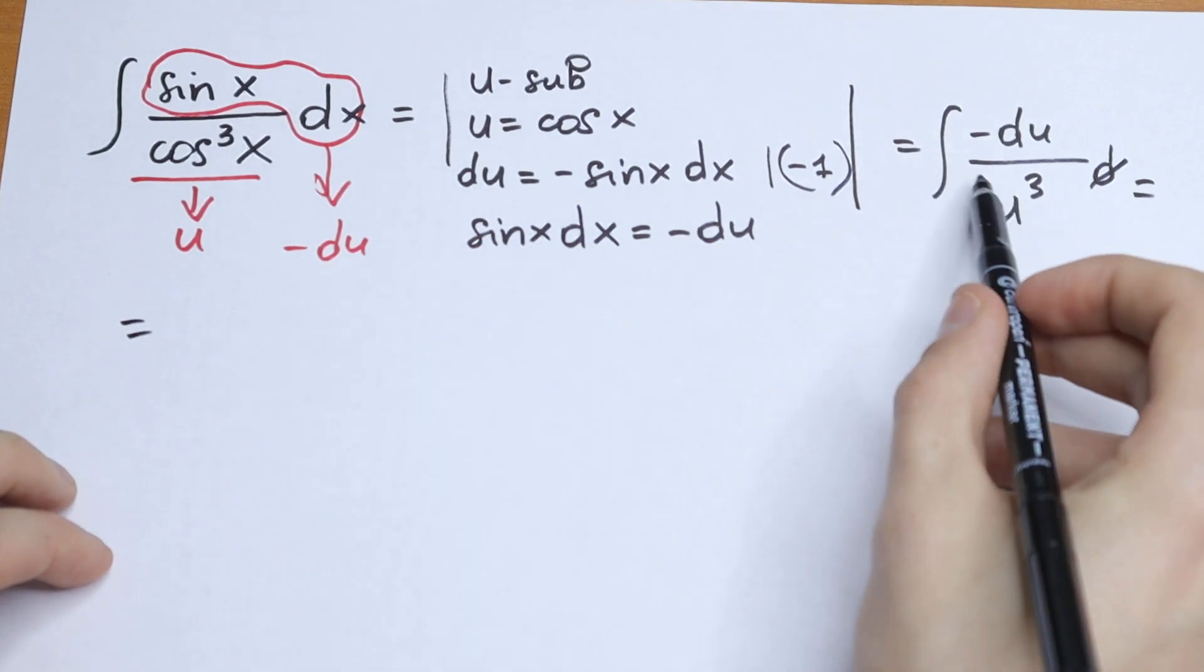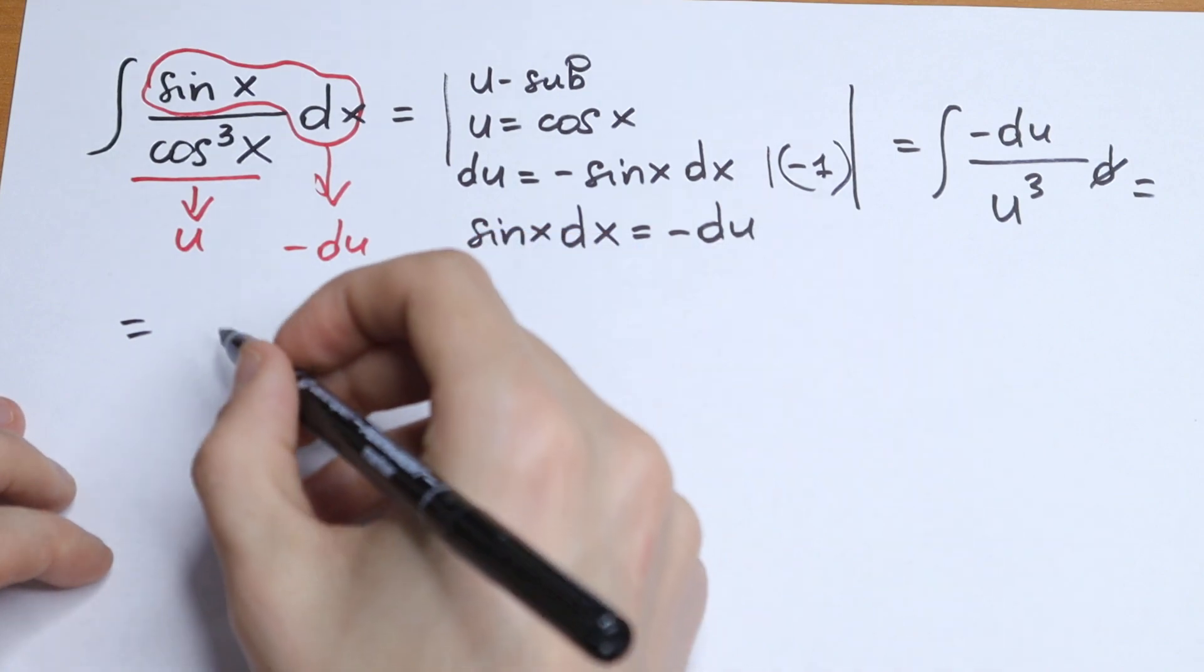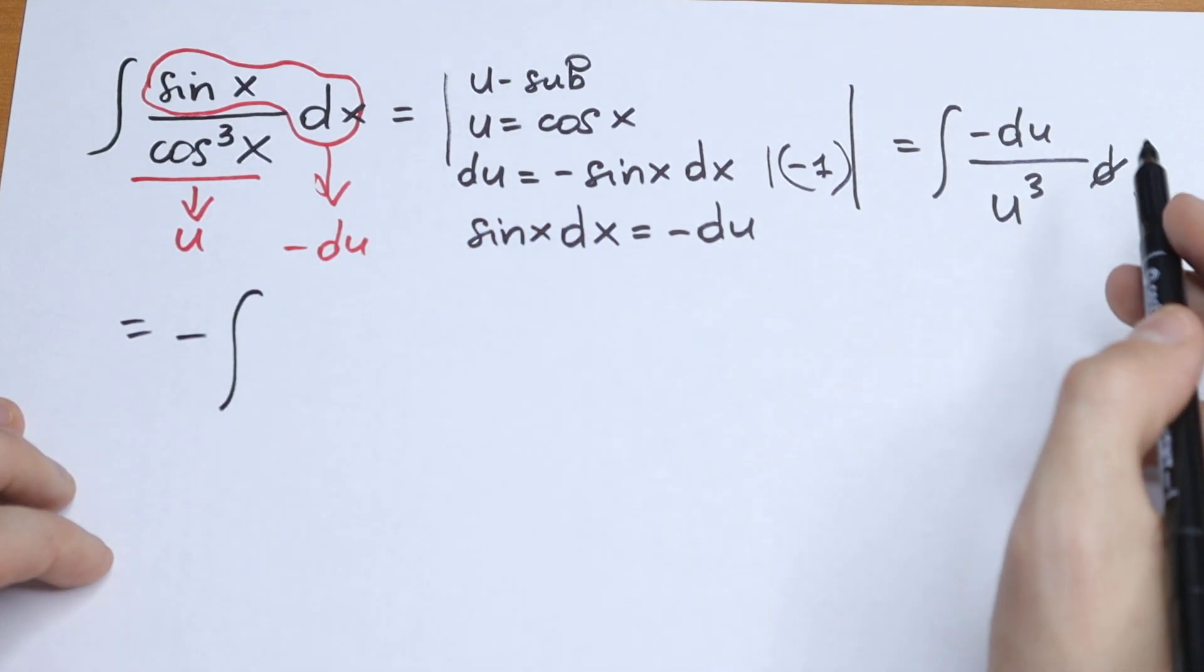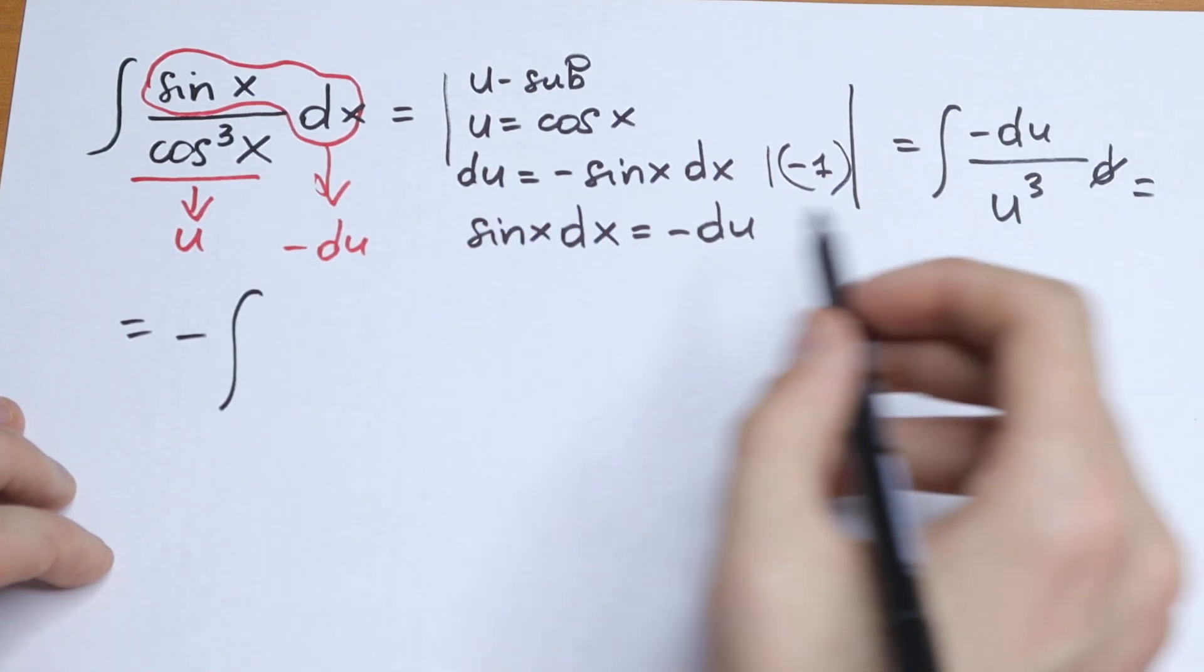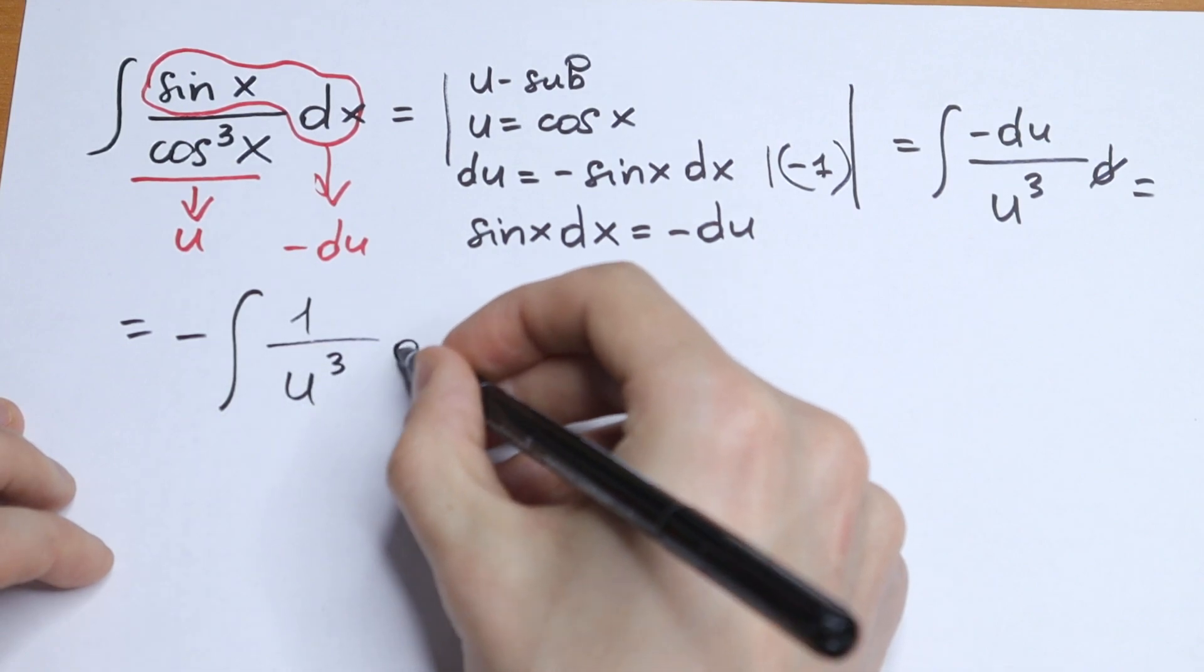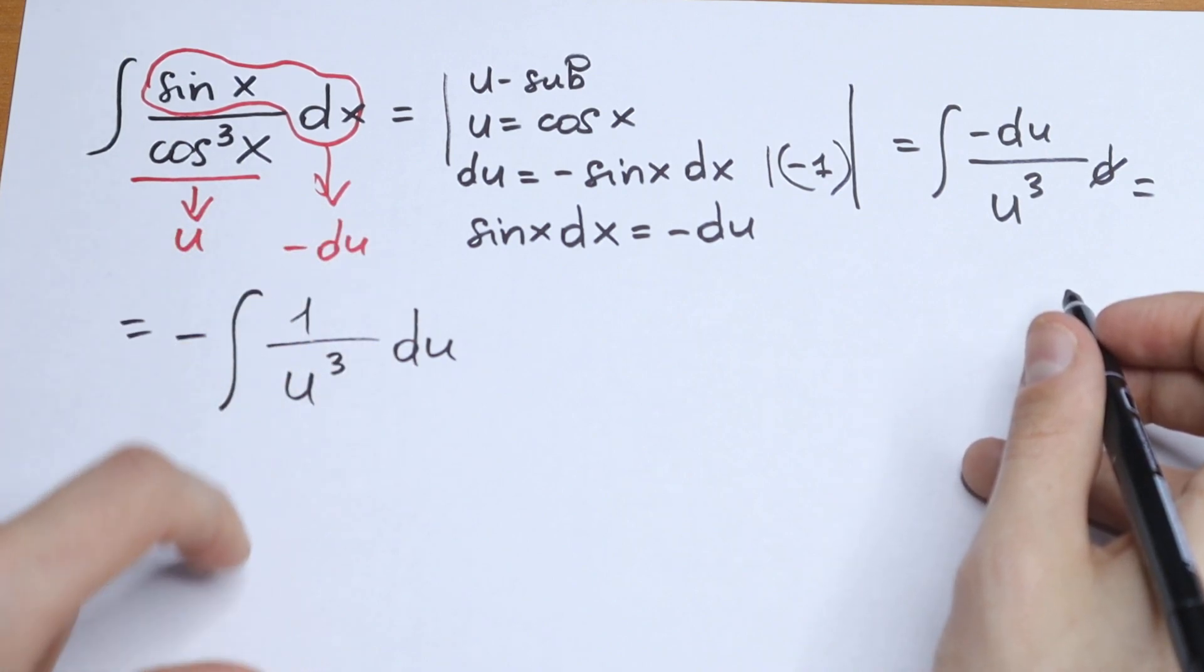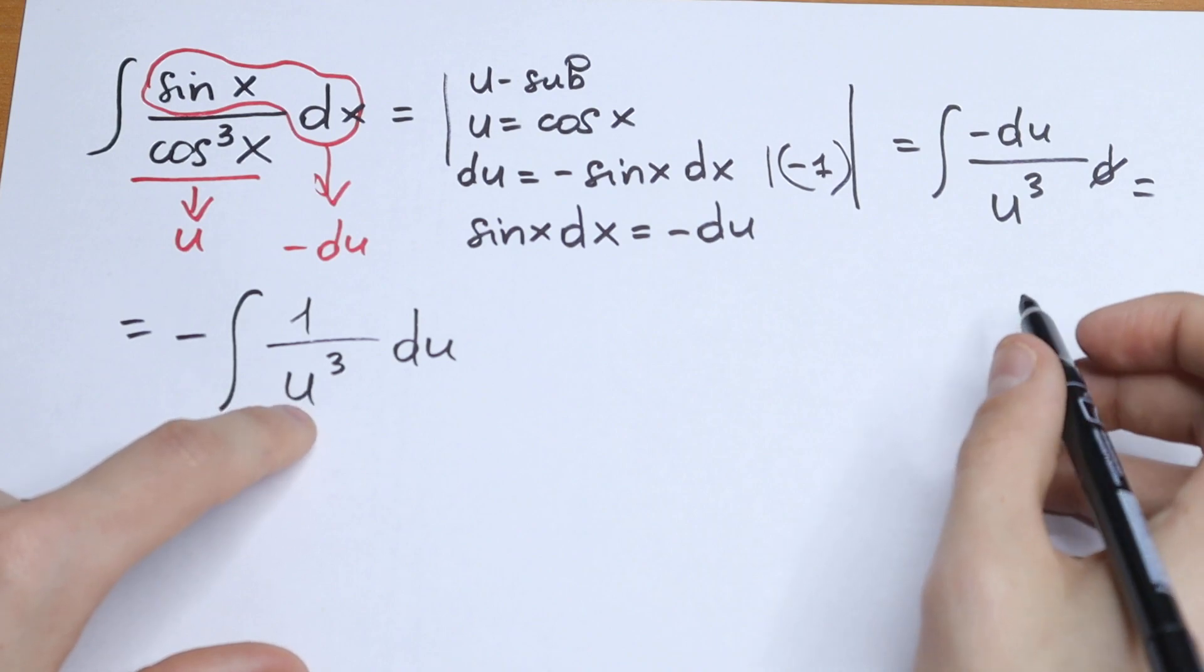So this minus we can write before our integral. Because we can do this—this is a constant. So minus integral. And this I write in a classic way. I write it as 1 over u³ du. So this is a table case. This looks like 1 over x cubed, but instead of x we have u.